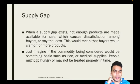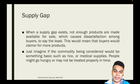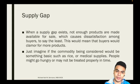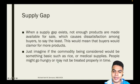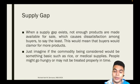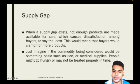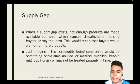For a supply gap: when a supply gap exists, not enough products are made available for sale, which means that demand is higher as compared to the supply. This causes dissatisfaction among buyers. This would mean that buyers would clamor for more products. An example would be a basic commodity such as rice or medical supplies — people might go hungry or may not be treated properly in time because of lack of resources.